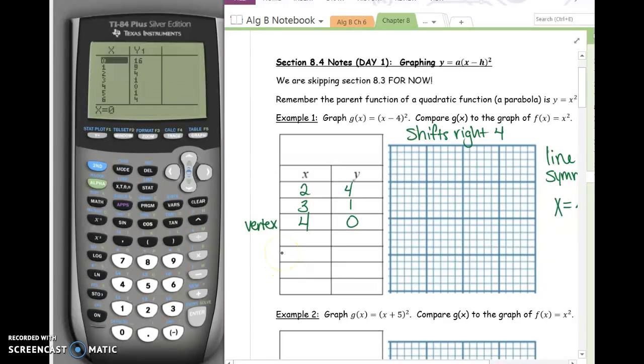Below on the table, we have the points 5, 1, and 6, 4. Do you see the symmetry in our y values? 4, 1, 0, 1, 4.